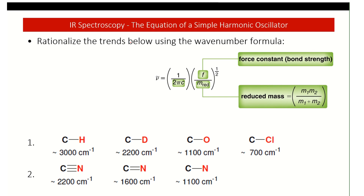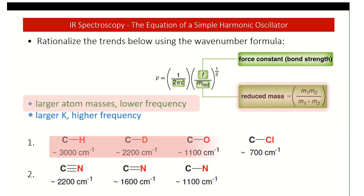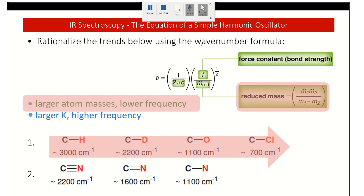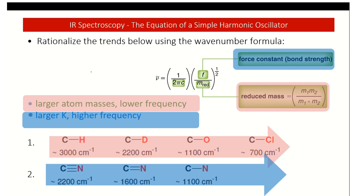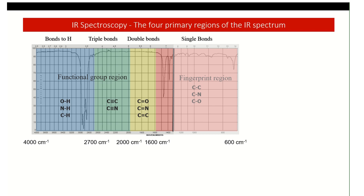The larger the mass, the lower the frequency. Conversely, the larger the force constant — i.e., the bond strength — the higher the frequency. So increasing bond strength increases frequency.